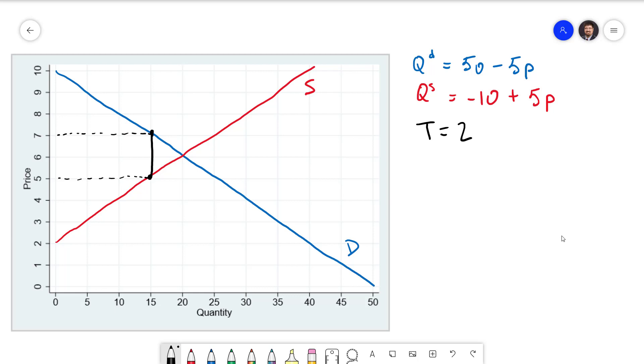Calculating welfare with a tax is relatively similar to calculating it without a tax, and the best way to do that is with a graph. Let's talk about consumer surplus first. Remember that consumer surplus is willingness to pay minus the price actually paid. On the graph we use the area between the demand curve and the price. When we have a tax we need to remember to use the price that the buyers pay. That's going to be 7 here.